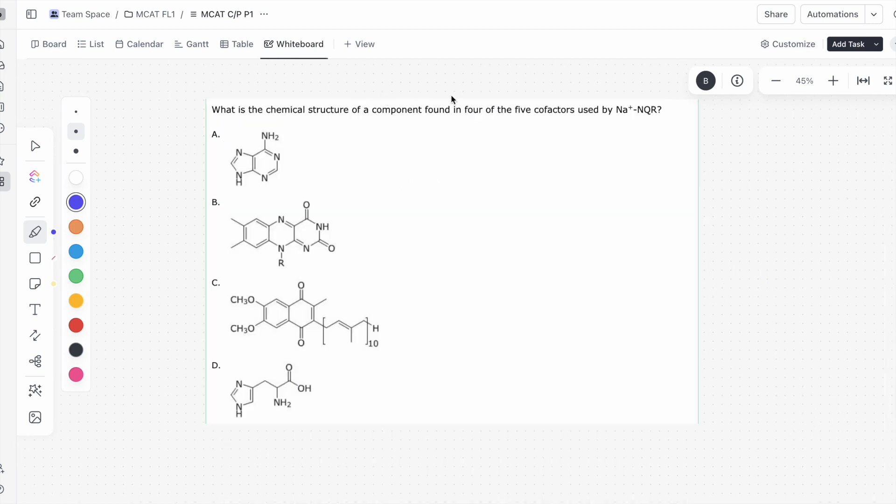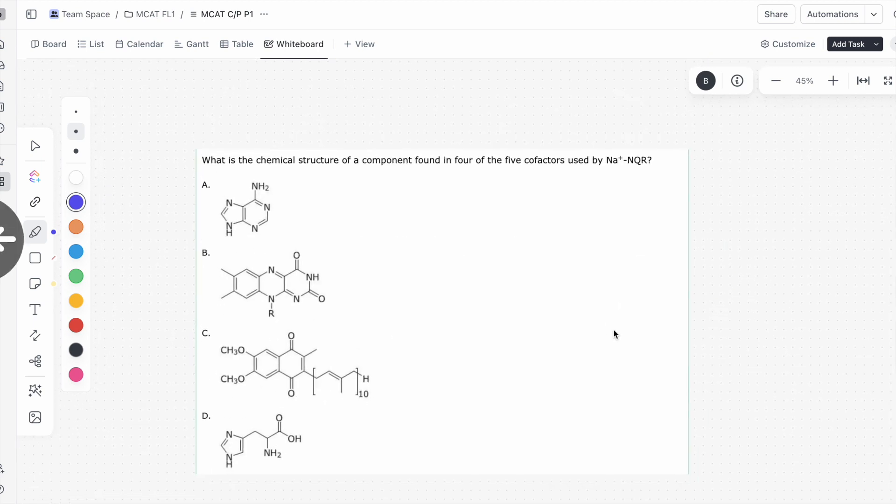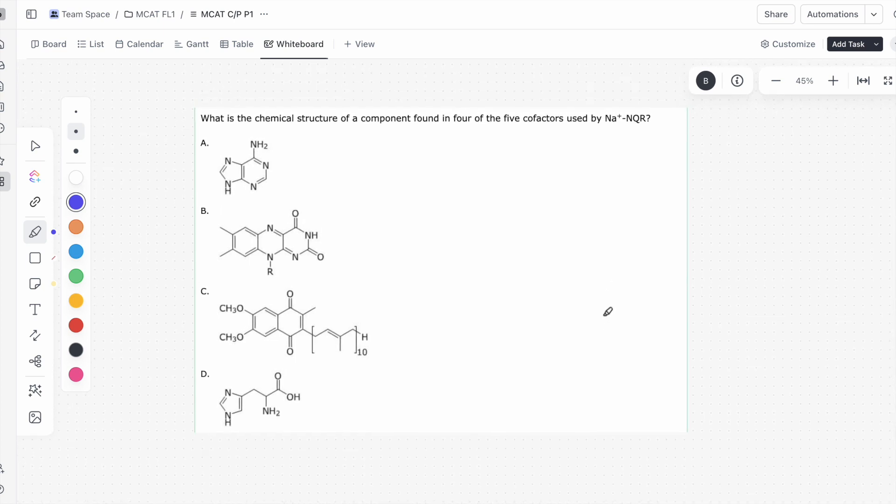It says, what is the chemical structure of a component found in four of the five cofactors used by sodium NQR? It tells us in the passage what these four out of five molecules are, and it's flavin. The redox active center found in four of the five cofactors of Na plus NQR. So we're looking for the structure of flavin, and this is where I say there's no such thing as high-low yield anymore, because there's a lot of questions from what I've seen that ask you about structures, and so it is important to memorize the structures of certain compounds now, flavin being one of them, and immediately you should know that this is B.